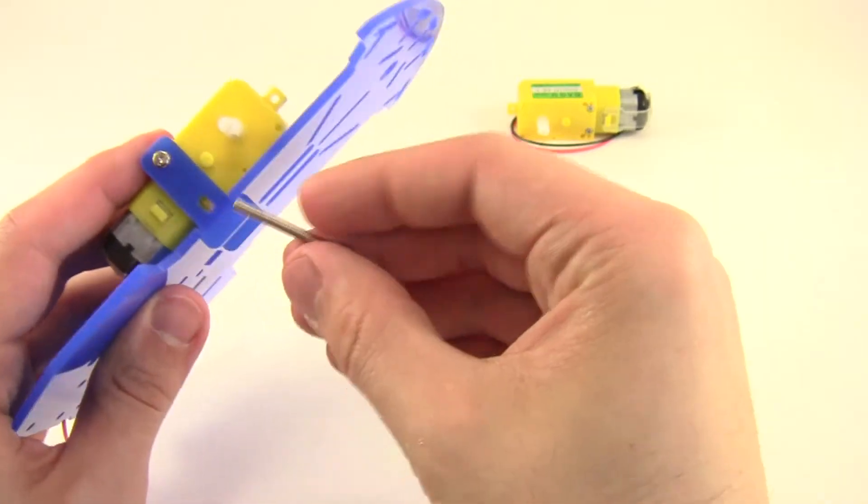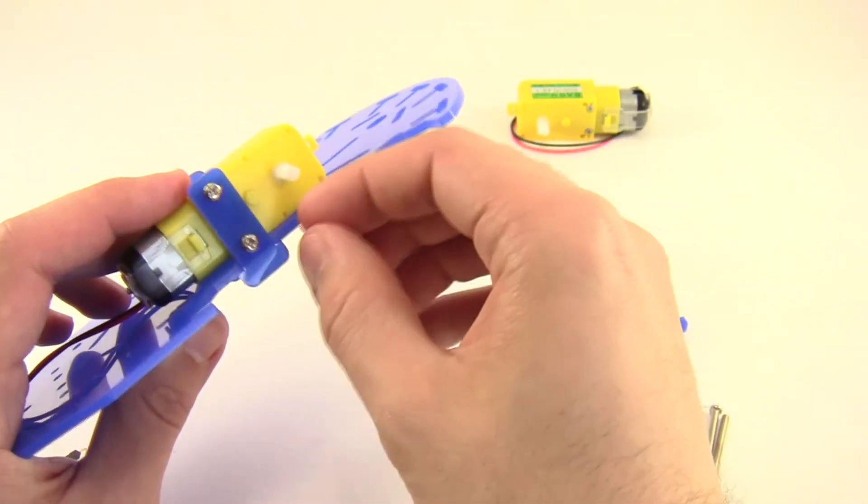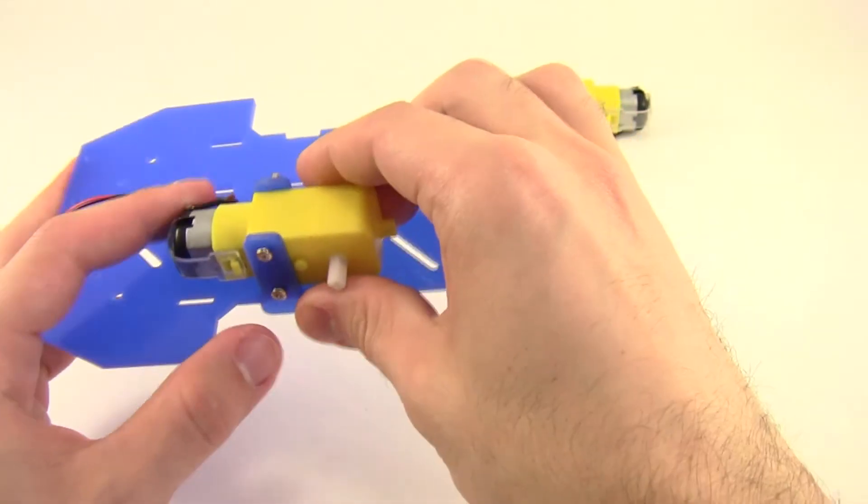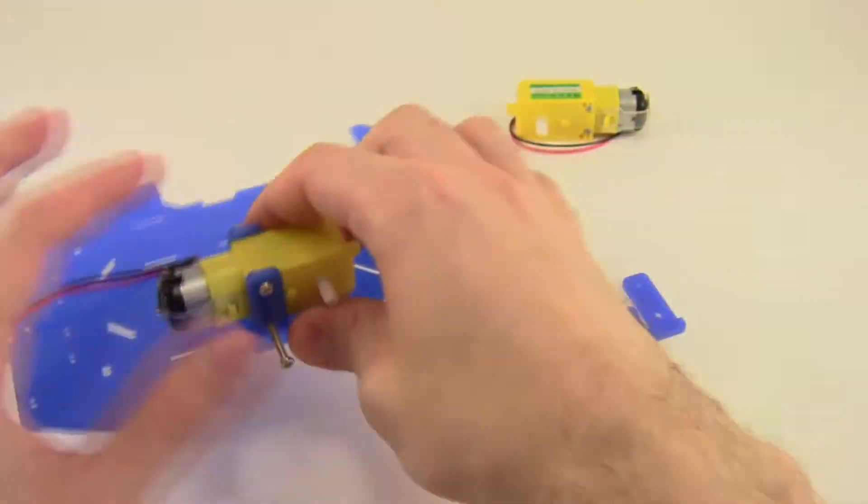And you should be able to get one screw through. And then once you have one screw through, you can go ahead and grab the second one and see that one went into the hole very easily and slid right through to the other side.